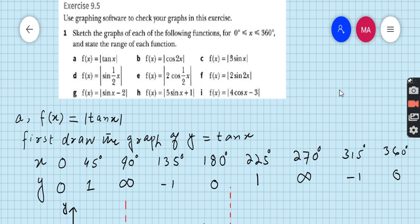So let's start exercise 9.5, question number 1: Use graphing software to check your graph in this exercise. Graph in this case the graphs of each of the following functions for 0 to 360 degrees and state the range of each function.